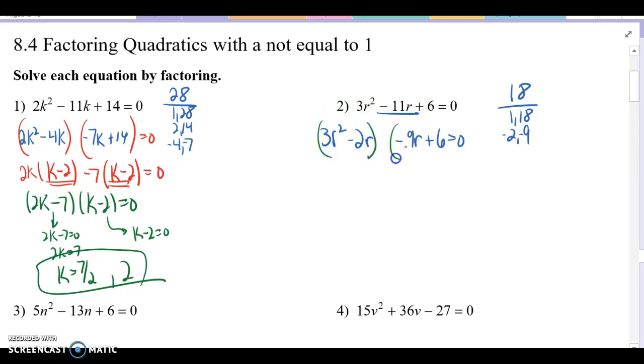Group. Group. GCF here is r. 3r minus 2. For this one, it's going to be a 3. But remember, we want that coefficient, leading coefficient, to be negative. So we're going to take out a negative 3, which makes the second side become 3r minus 2. The good news is that those are, in fact, the same. So in factored form, we have r minus 3, 3r minus 2 equals 0.